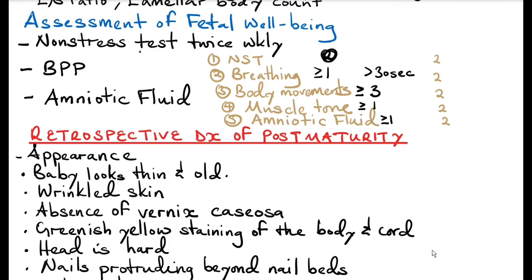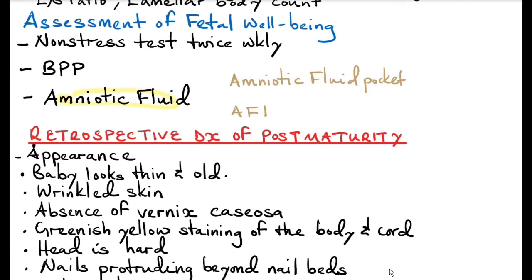The total score of the biophysical profile is 10. If you score 8 to 10, this is a normal biophysical profile. But if it's less than 8, this suggests chronic fetal asphyxia and you should deliver the baby. For assessment of amniotic fluid, the normal amniotic fluid pocket should be about 2 to 8 centimeters, whilst the amniotic fluid index should be about 5 to 25 centimeters. If the amniotic fluid pocket is less than 2 or the amniotic fluid index is less than 5, this is severe oligohydramnios and indicates immediate delivery of the baby.